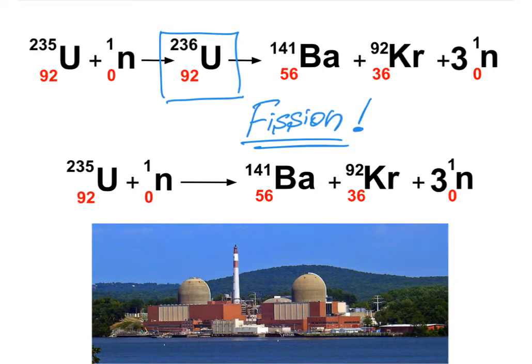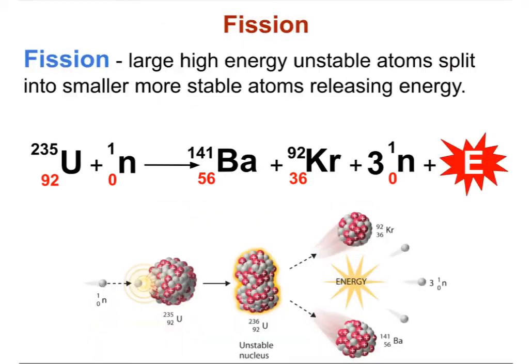This particular reaction of fission is quite famous. It is the one that was used in the first nuclear bombs, and it is still the same reaction that we are using today in our nuclear power plants to produce energy. Fission is a process when a large, high-energy, unstable nuclei is split into smaller ones and energy is released in the process.